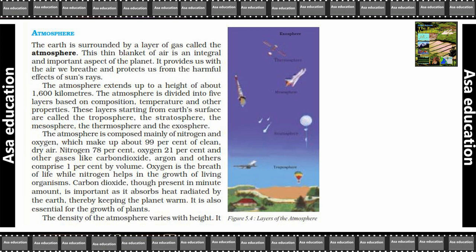The atmosphere extends up to a height of about 1600 km. Yeh joh atmosphere hai, yani gaseous layers ka ek blanket, yeh lag-bhag 1600 km ki height cover kiye hue hai. The atmosphere is divided into five layers based on composition, temperature and other properties. Ab atmosphere ko hum 5 hisso mein baante hai — uske composition ke hisaab se, temperature ke hisaab se, ya uske aur properties ke hisaab se.